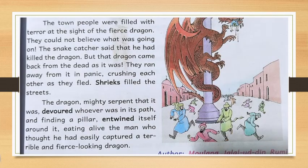The town people were filled with terror at the sight of the fierce dragon. They could not believe what was going on. The snake catcher had said that he killed the dragon, but the dragon came back from the dead. They ran away from it in panic, crushing each other as they fled. Shrieks filled the streets. The dragon, mighty serpent that it was, devoured whoever was in its path, finding a pillar and twining itself around it, eating alive the man who thought he had easily captured a terrible and fierce looking dragon.